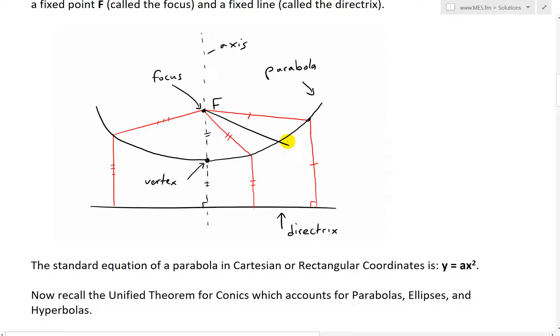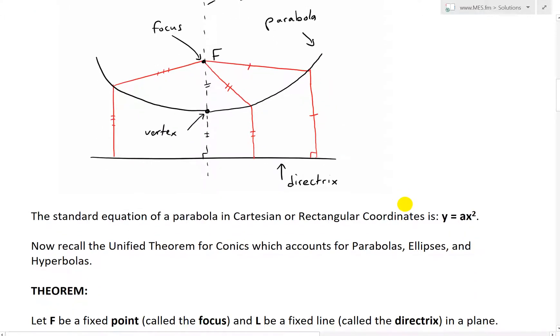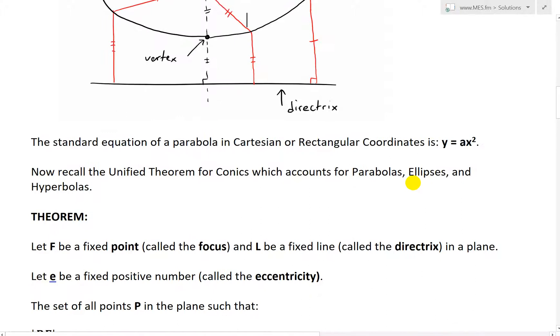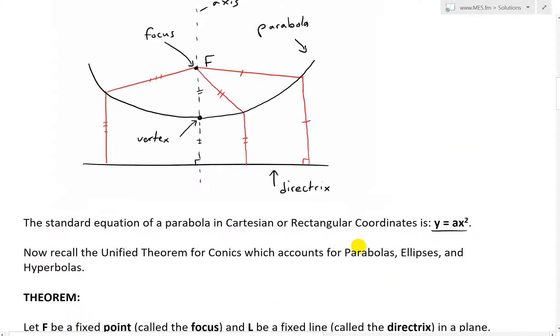it's the same distance as from this to the F, as well as if you were to go here, for example, this is going to be the same distance as going to here, one, two, three. So the curve is going to be following along that theorem or definition. So it always needs to be the exact same in order for it to be called a parabola. And also to note that the standard equation of a parabola in Cartesian or rectangular coordinates is y equals ax squared, just a typical parabola equation.